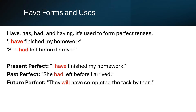Uses of have. Have forms include have, has, had and having. It's used to form perfect tenses. For instance, I have finished my homework is in the present perfect tense. She had left before I arrived is in the past perfect tense. Future perfect: they will have completed the task by then.